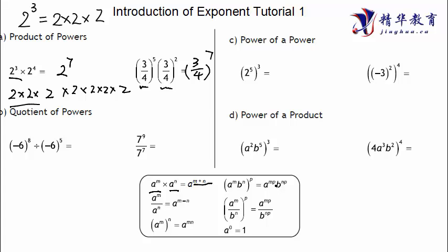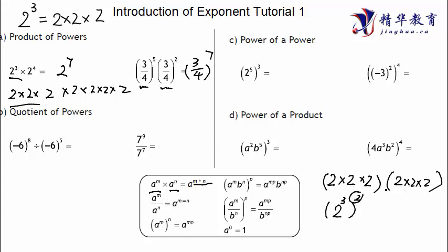The next part is the power of power — power multiplied by power. What does power of power mean? Let's use the same example: 2 to the power of 3, to the power of 2. That means 2 times itself three times — so 2 times 2 times 2 — and then the entire thing times itself twice, giving us 2 times 2 times 2 times 2 times 2 times 2, which is 2 to the power of 6. Power of power equals power multiply: 2 to the power of 3 times 2 equals 6.